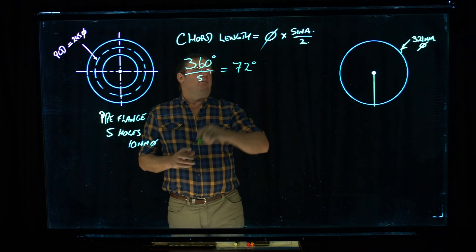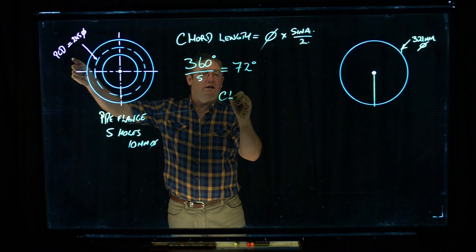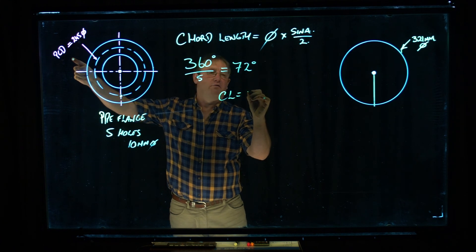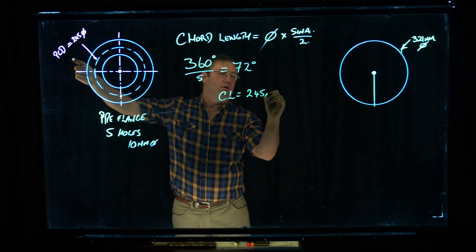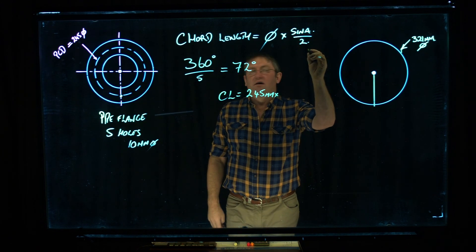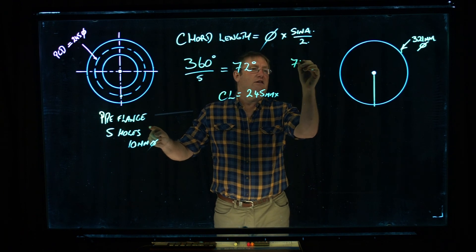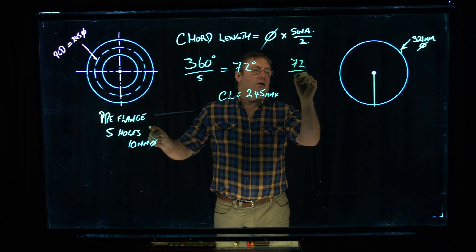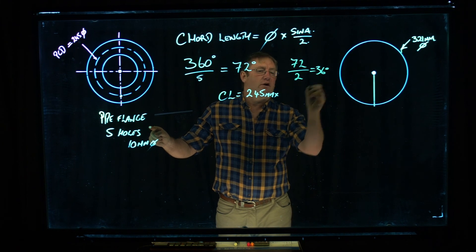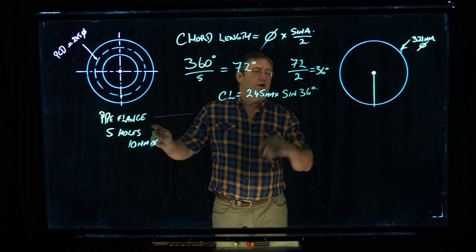So if we put this into this formula, the chord length equals the diameter of 245mm. And we're going to have sine A divided by 2. So what you need to do for a start is divide the 72 by 2, and that equals 36 degrees. So it's sine 36 degrees.